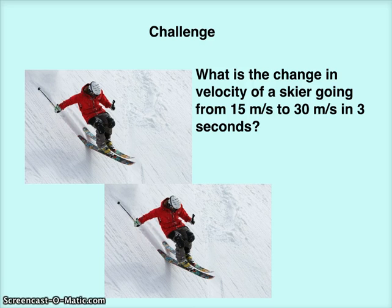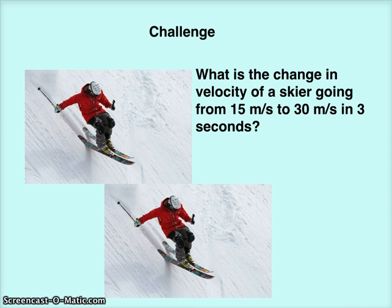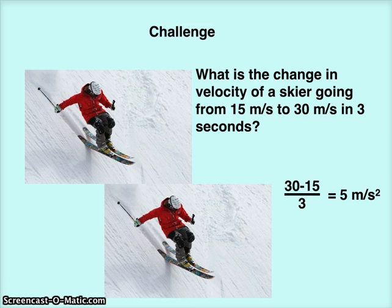Let's challenge. Your turn. What is the change in velocity of a skier going from 15 meters per second to 30 meters per second in 3 seconds? 30 minus 15 gives you 15, divided by 3 gives you 5 meters per second squared.